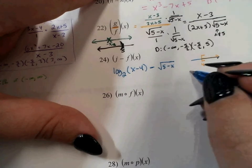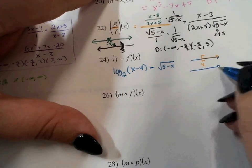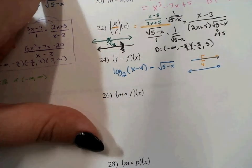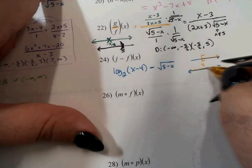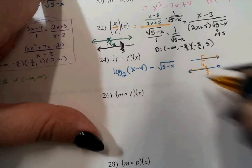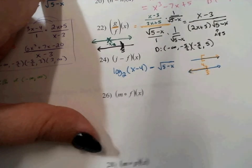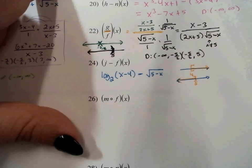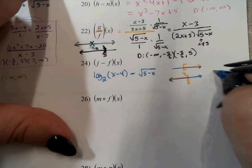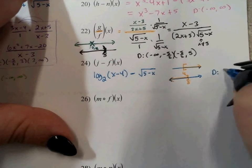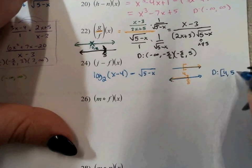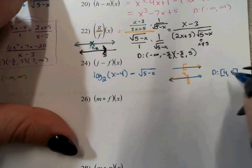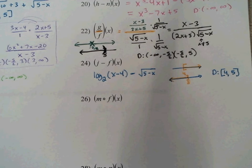The square root only exists from negative infinity up until 5. Which means they only both exist in that small sliver between 4 and 5. So my domain would be 4 to 5 for that one.